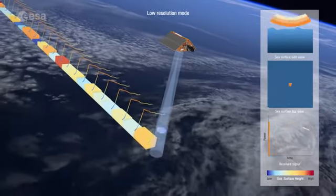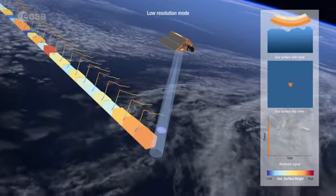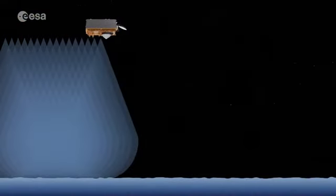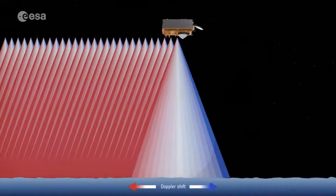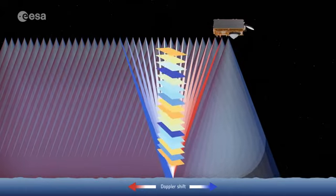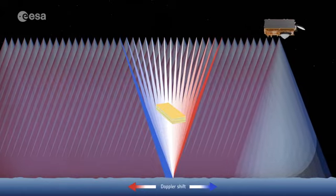Unfocused synthetic aperture radar processing exploits the Doppler characteristics of the return echoes. Synthetic azimuth beams are formed and steered to a specific location on the Earth's surface to build a stack of waveforms.